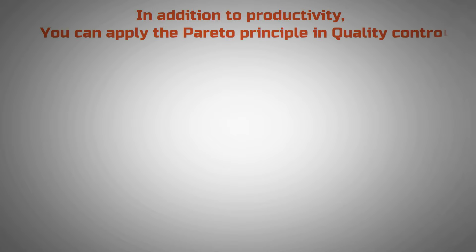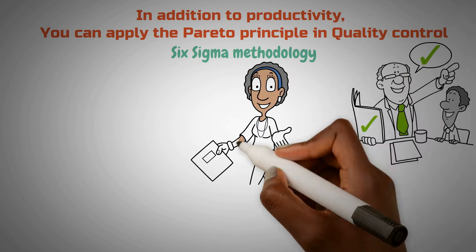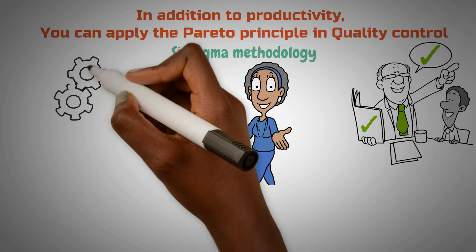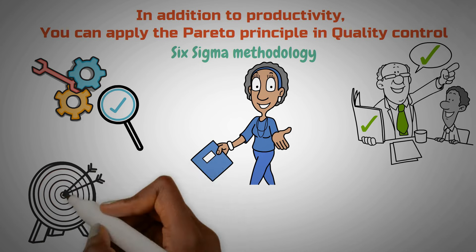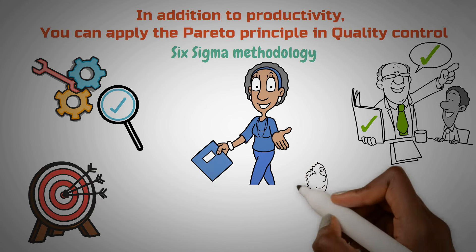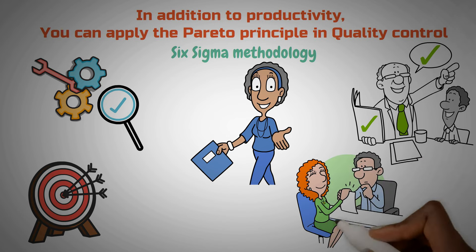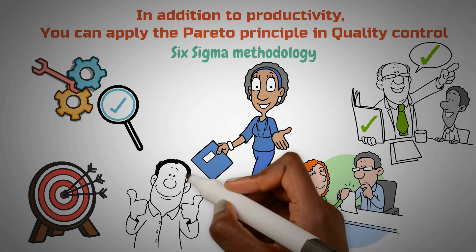In addition to productivity and decision-making, you can apply the Pareto Principle in quality control. Particularly within the Six Sigma methodology, Pareto analysis and Pareto charts are indispensable tools. Six Sigma aims to minimize variation in processes to enhance production output, and Pareto charts play a crucial role in achieving this goal. By employing a Pareto chart, practitioners can visually represent data to discern which actions to prioritize — essential for understanding where to focus efforts effectively.